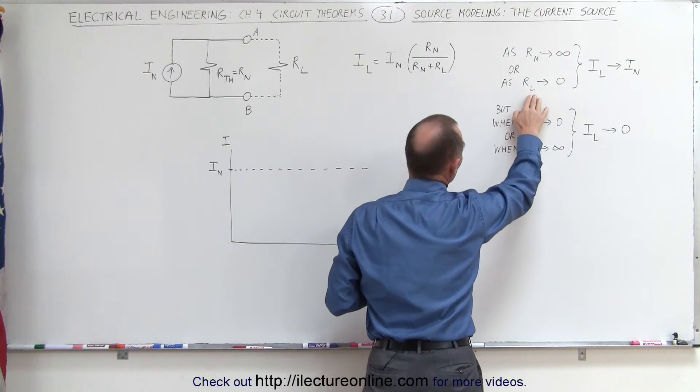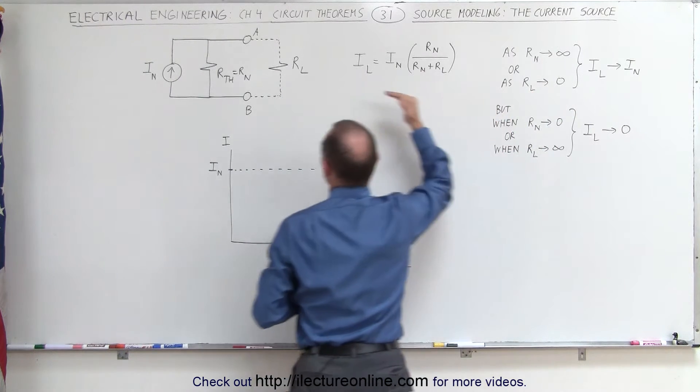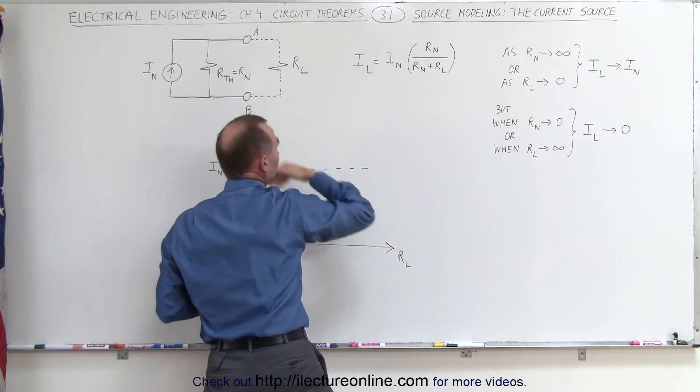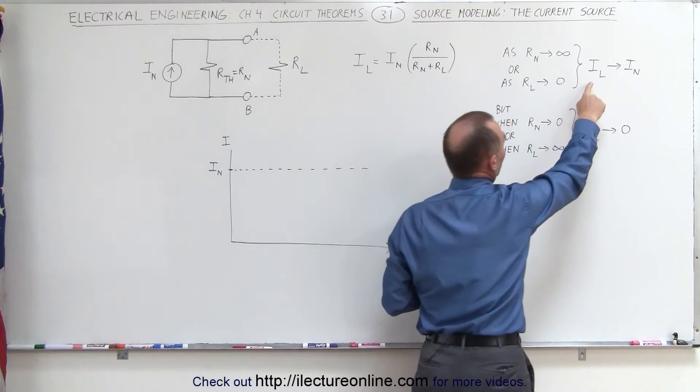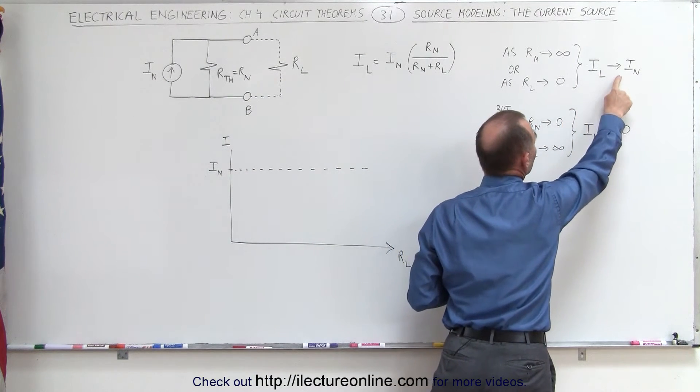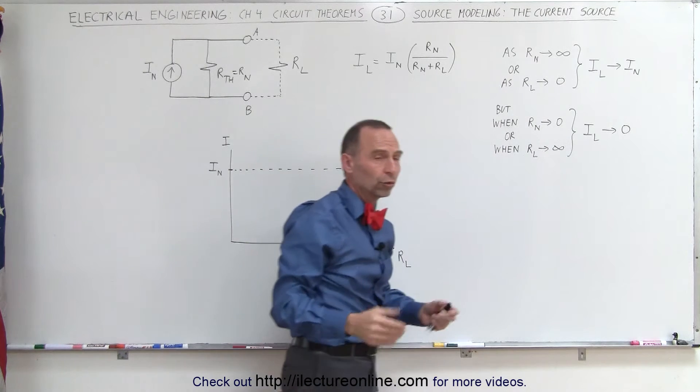Consequently also, if the load resistor becomes very small, again, the current will tend to go through the load resistor, and then the current through the load resistor will approximate the current of the source, the Norton current.